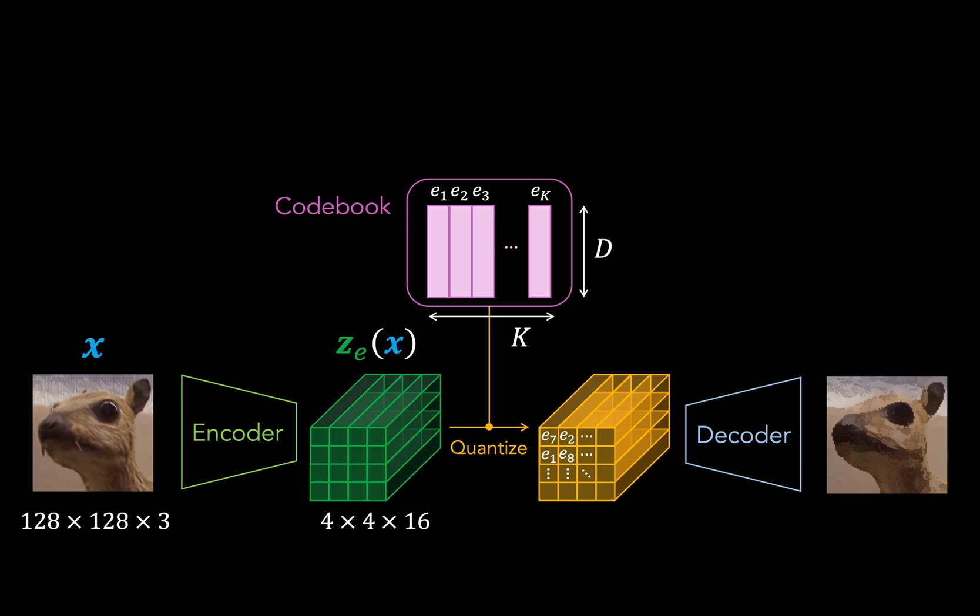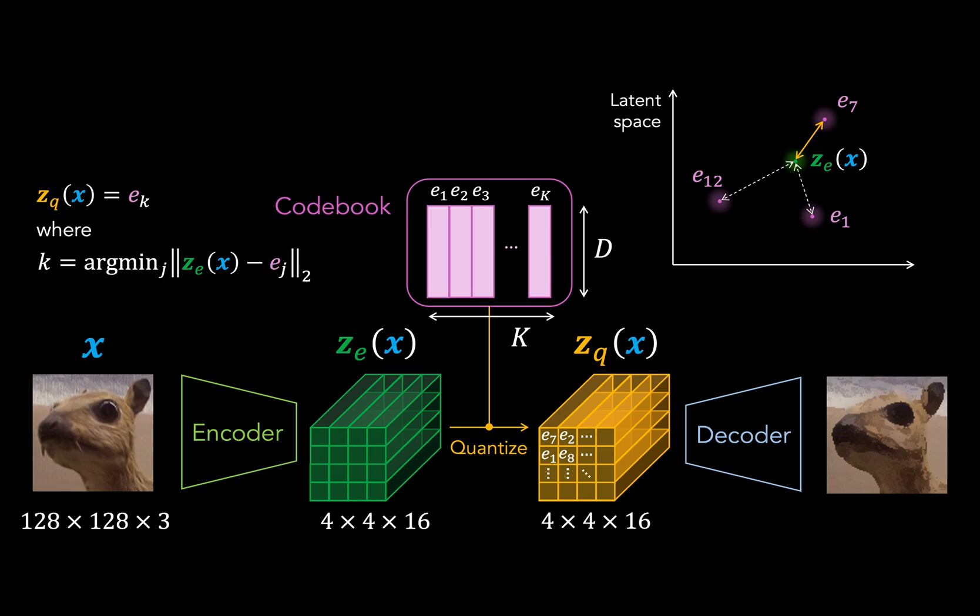This also means that our codebook dimension d is equal to 16. So now we've reached the quantization step. Here, each encoding latent ze gets replaced by the closest codeword in the codebook. So this codeword then becomes our quantized latent zq. And here closeness is just measured using L2 norm or Euclidean distance. So basically each encoding vector ze snaps onto the closest codeword in the codebook to become the quantized vector zq. So every latent that's fed to the decoder has to be part of the codebook.